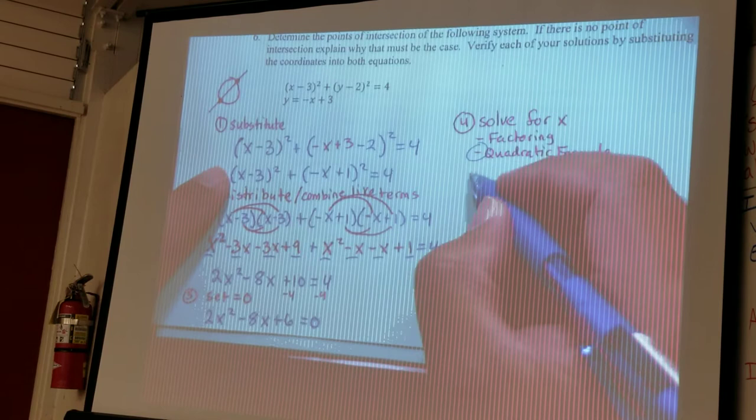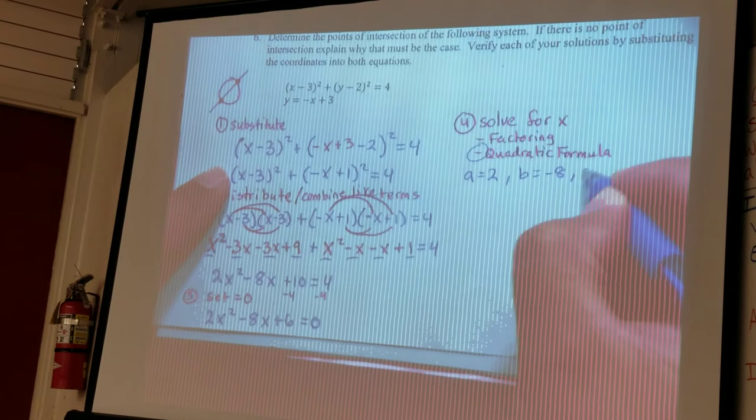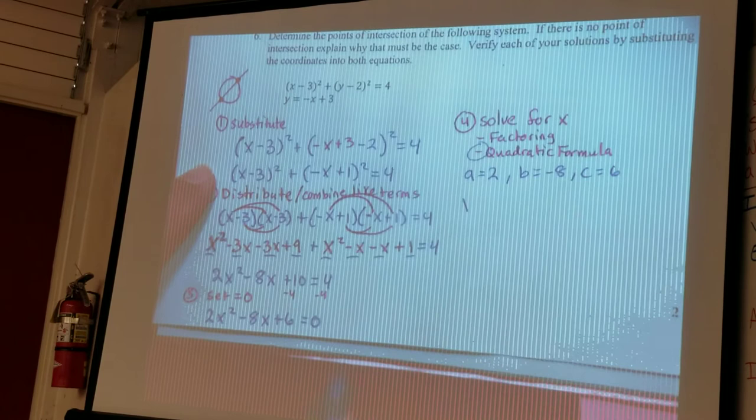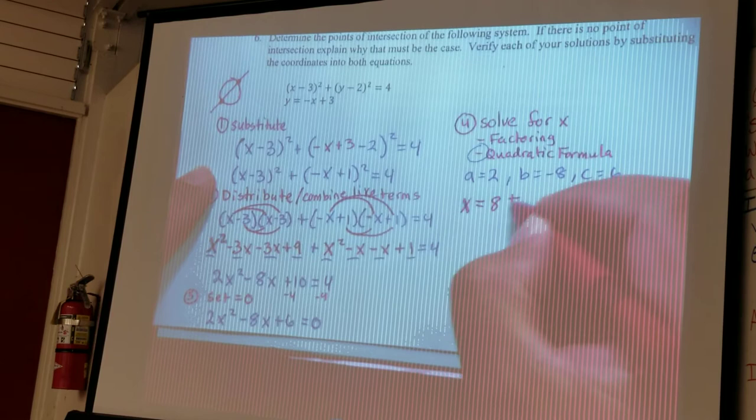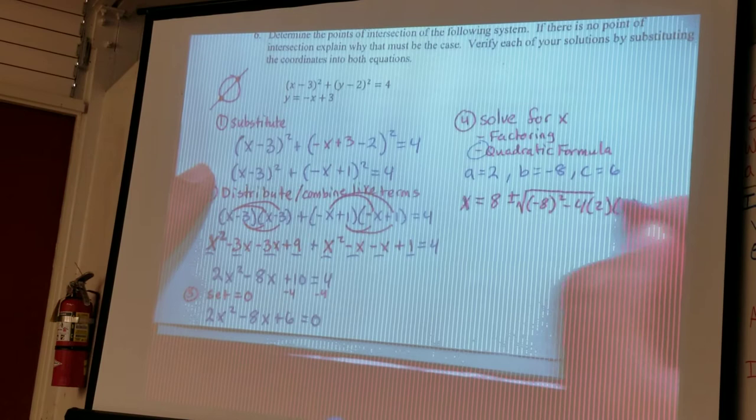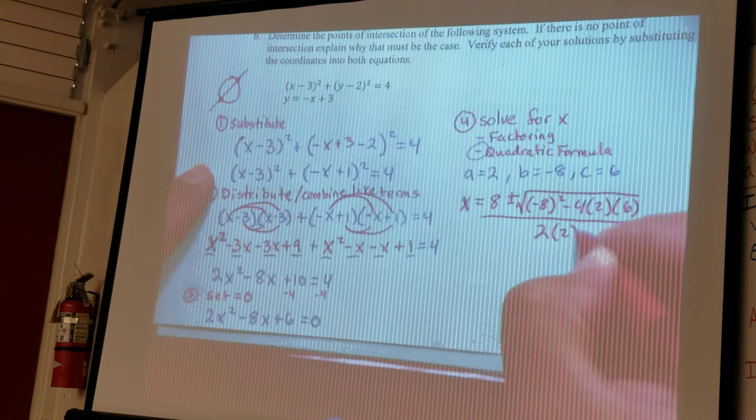So anyway, a, so I'm going to use quadratic formula, a is equal to 2, b is equal to negative 8, c is equal to 6, and then from here I'll plug it into the quadratic formula. I'll do this in red, x equals negative b plus or minus square root, I'm trying not to sing, but it's hard, b squared minus 4ac, all over 2a.